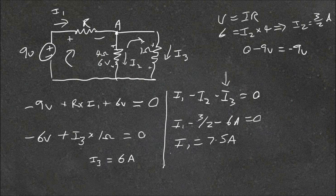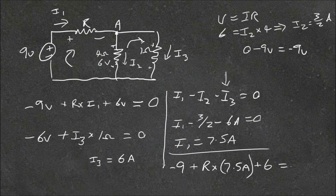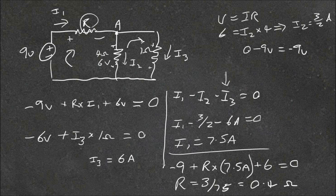Now we know I1, we can put it into the first equation: minus 9 plus R times 7.5 amps plus 6 equals zero. Rearranging, we get R equals 3 over 7.5, which is equal to 0.4 ohms. And so we've found our R value. That's how we use Kirchhoff's voltage and current laws to analyze a circuit. If you have any questions, post a comment, please subscribe and visit the website. Thanks.